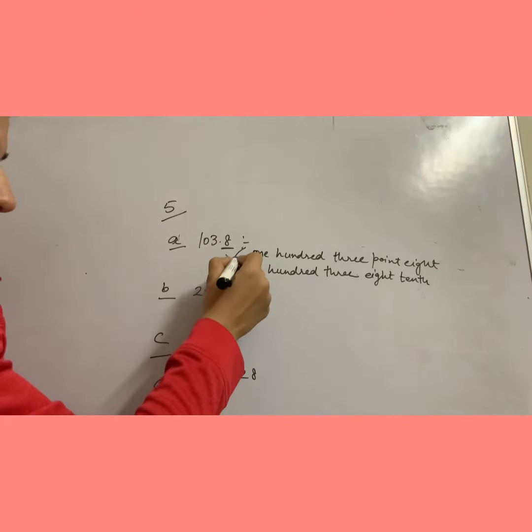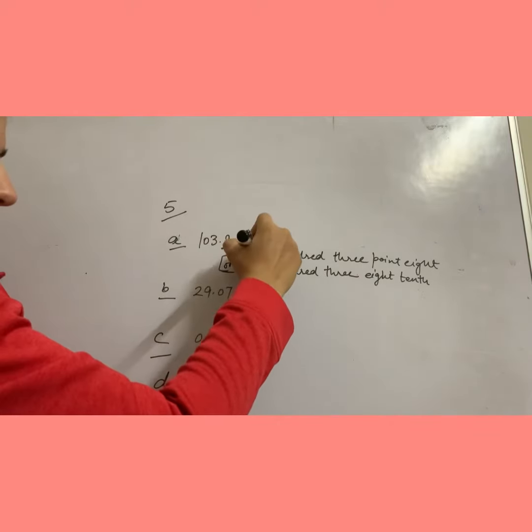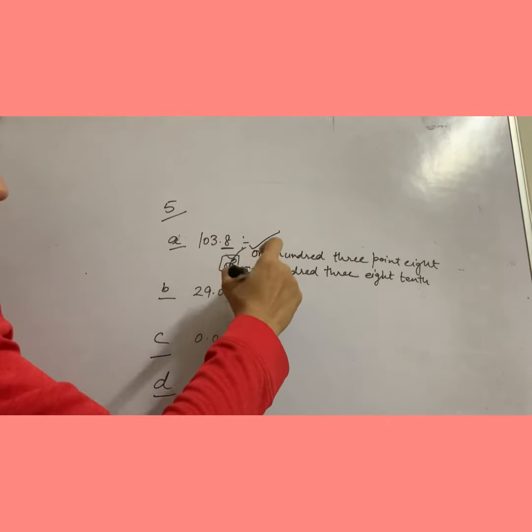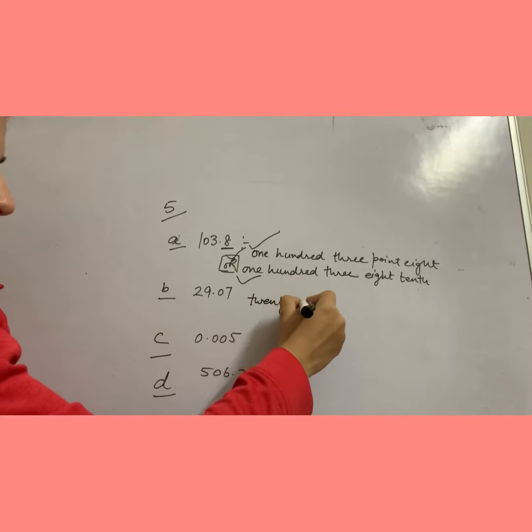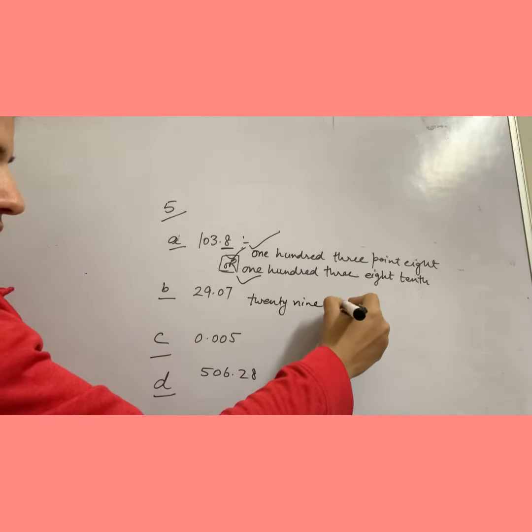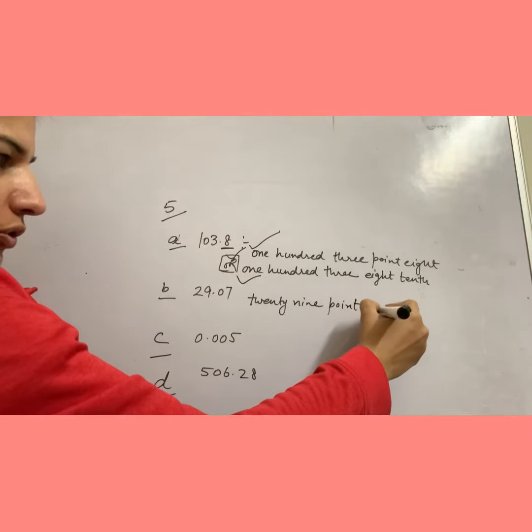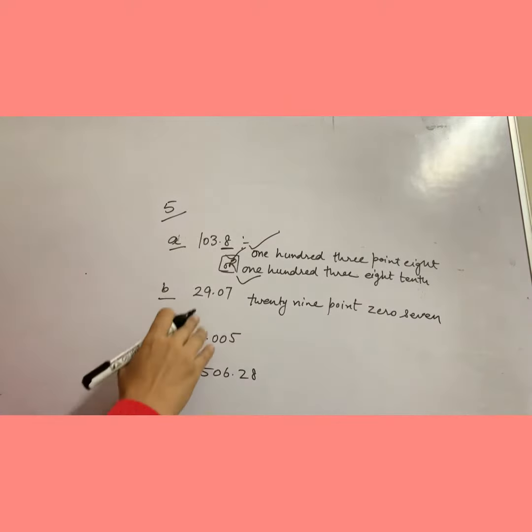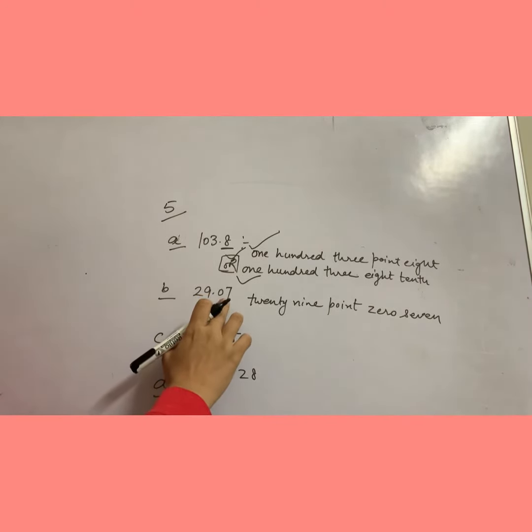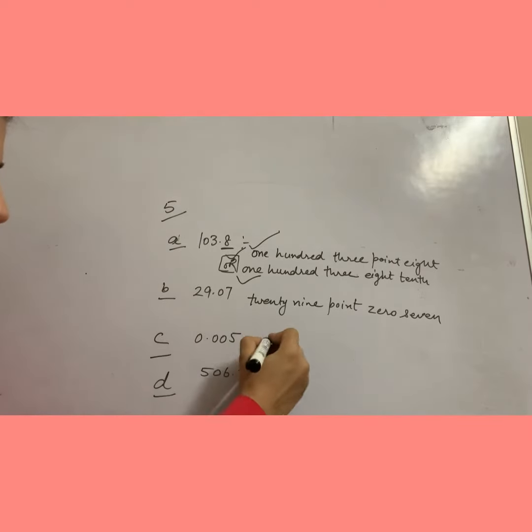Likewise, I'm just writing here, or we can write like this. We can also write like this. And this is twenty nine point zero seven, or I can write also twenty nine seven hundredths.